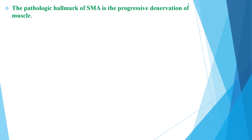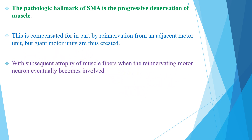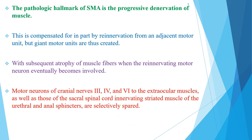The pathologic hallmark of spinal muscular atrophy is the progressive denervation of the muscle. This is compensated for, in part, by reinnervation from adjacent motor units, but giant motor units are thus created. With subsequent atrophy of muscle fibers, when the reinnervating motor neuron eventually becomes involved, the motor neurons of cranial nerves 3, 4, and 6 to the extraocular muscles, as well as those of the sacral spinal cord innervating the striated muscles of the ureter and anal sphincters, are selectively spared.